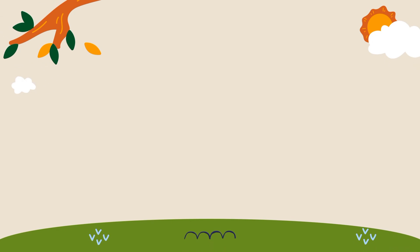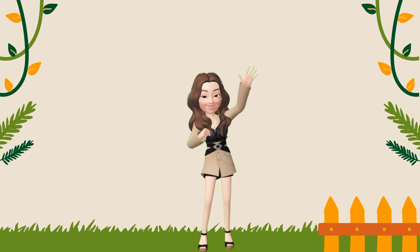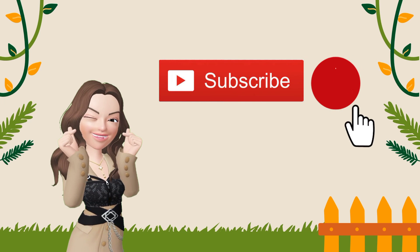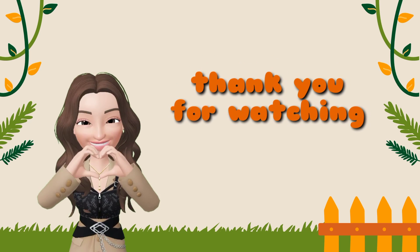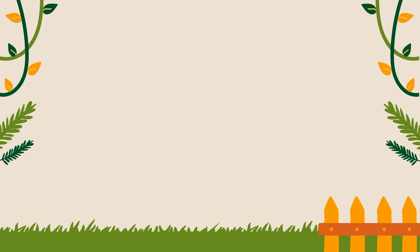Before we end this lesson, I would like you to remember that individual organisms live together in an ecosystem and depend on one another. In fact, they have many different types of interaction with each other, which is what we call the ecological relationship, and many of these interactions are critical for their survival. That's it — see you in our next lesson. If you are new to my channel, please don't forget to hit the subscribe button and the bell notification so that you will be notified for more videos like this. Thank you.